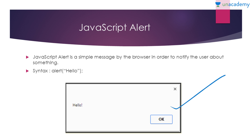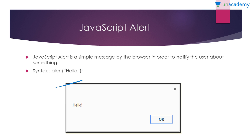JavaScript alerts are used to notify the user and they are known as JavaScript alerts. We just have to write very simple code for them, which is the alert() function followed by parentheses. Inside the parentheses you can write any message in inverted commas. Here I have written 'hello' and you can see the output will be 'hello'.